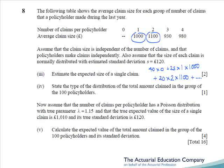Part four asks us to state the distribution of the total claim amount in the group of 100 policyholders, using S to stand for the total amount claimed. We were told the amount of each claim X is normally distributed, but the number of claims from policyholders had a Poisson distribution. So we're describing a compound distribution where N is Poisson — called a compound Poisson. The last part asks us to calculate the expected value of the total amount claimed and its standard deviation, using the standard compound distribution formula given in the tables.